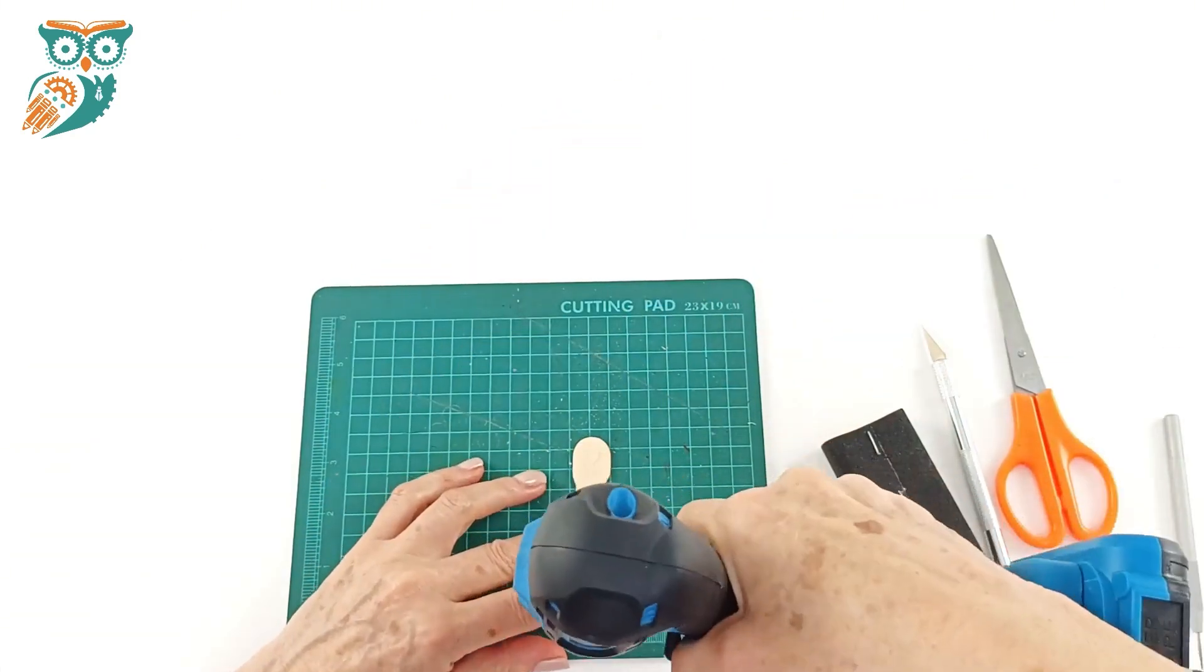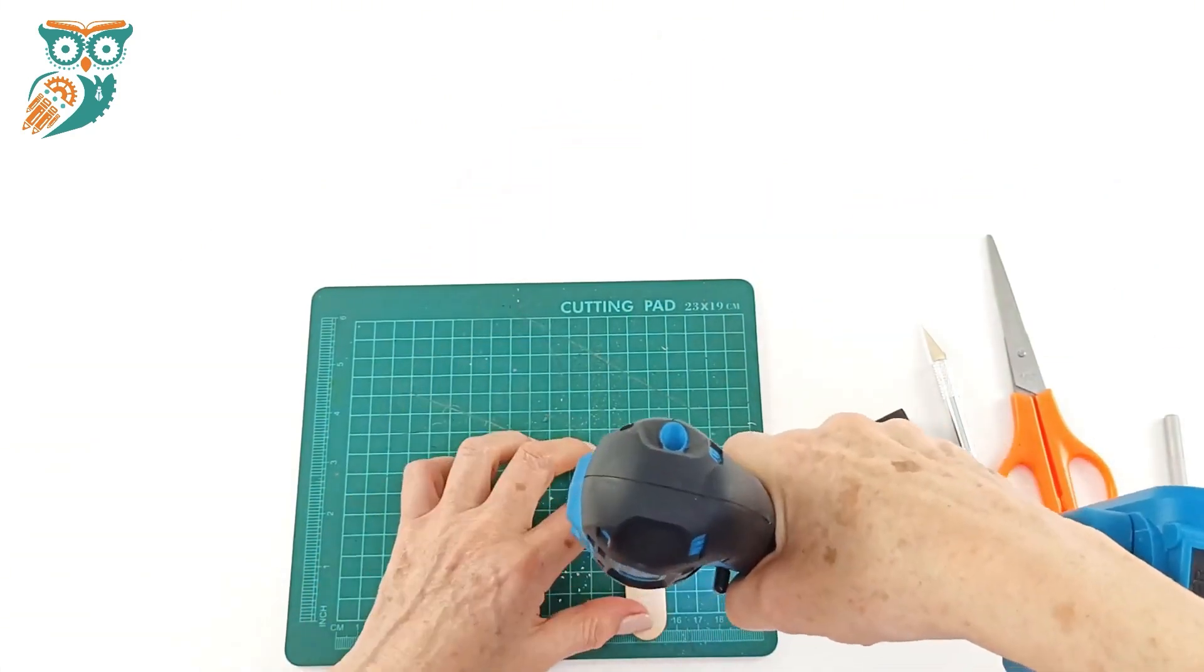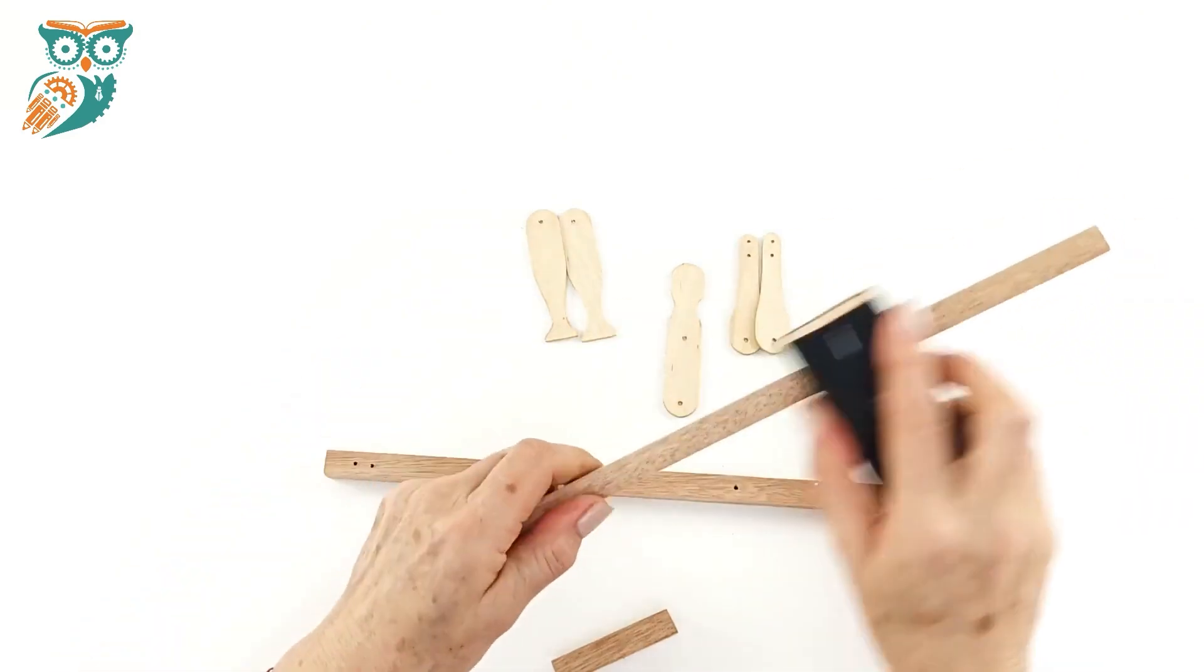When they're finished, we sanded them down really quick and then we're going to use a drill or a screwdriver to pre-make the holes in each piece. So here you can see we've got our body, two arms, and two legs.